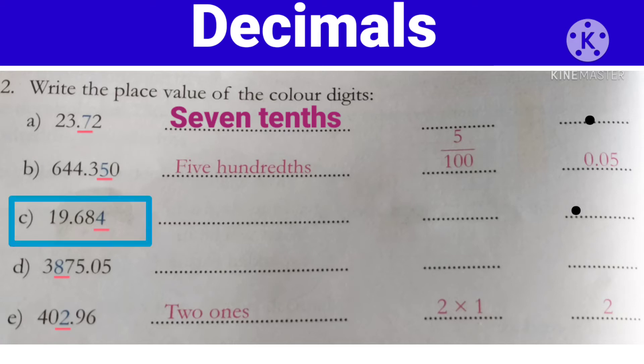Now next one — c) 19.684. Yahaan 4 ke niche underline karawa hai. Toh hume batana hoga ki 4 kaunse place pe hai. 6 jo hai, woh 10th place pe hoga. 8 jo hai, woh 100th place pe hoga. Toh 4 jo hai, woh 1000th place pe hoga. Toh yahan hume likhna hoga: 4/1000th.